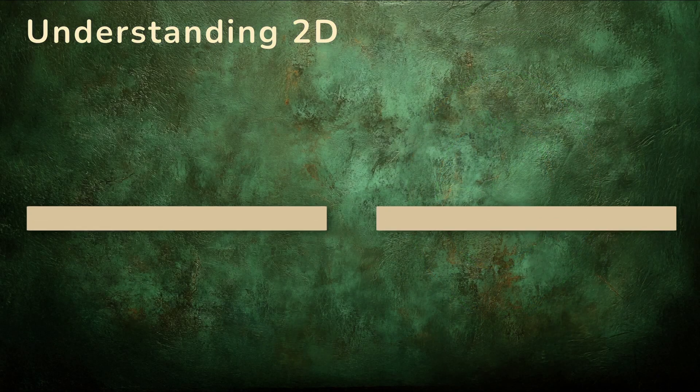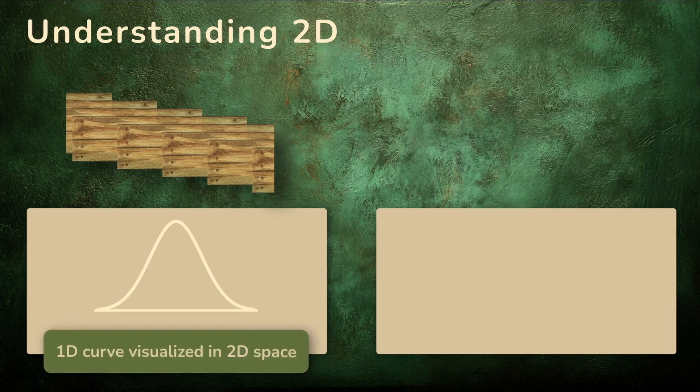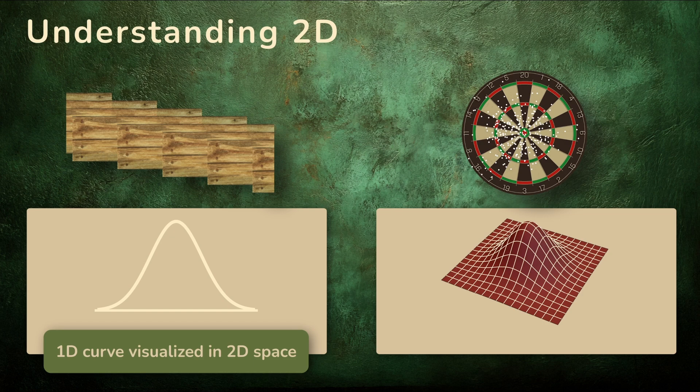In the woodcutting example, the board lengths follow a bell curve. And curves are one-dimensional shapes. For the dart example, the distribution of the hits give rise to a smooth surface in space. And surfaces are two-dimensional shapes.